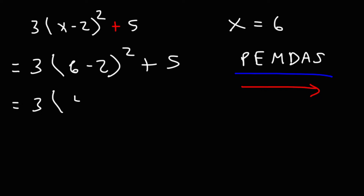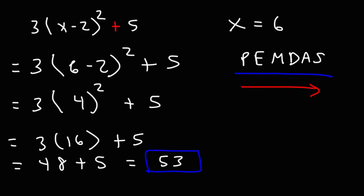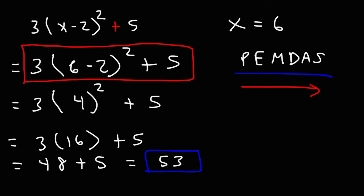First, replace x with 6. Inside the parentheses: 6 minus 2 is 4. Then 4 squared, or 4 times 4, is 16. Now we shouldn't add 16 plus 5 yet — we need to perform multiplication first. 3 times 16 is 48. And 48 plus 5 is 53, so that's the answer for this problem. If you want to check your work, simply plug it into a calculator.